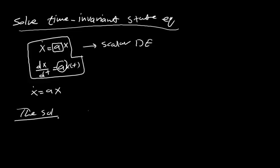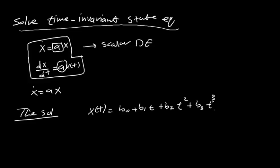The solution will be assumed to be a power series or polynomial, so x(t) equals b0 plus b1*t plus b2*t squared plus b3*t cubed, and so on up to bk*t^k. Now substitute this into the equation, so we have to differentiate it with respect to time.